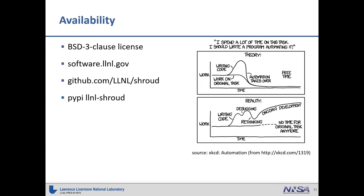During Q&A, an audience member asked which packages actually use Shroud. This is really the first public announcement of it. It's used inside the laboratory by about a dozen different libraries, so nothing you would recognize externally, but it has seen real-world use and has been around for about four or five years. Another question asked whether link-time optimization was tried to see if the additional overhead from wrappers can be removed.